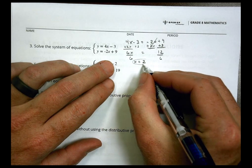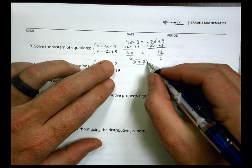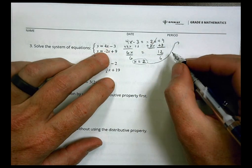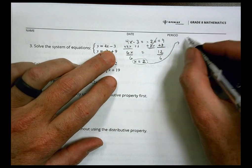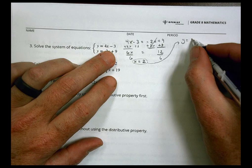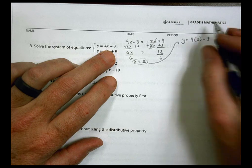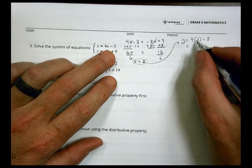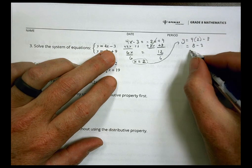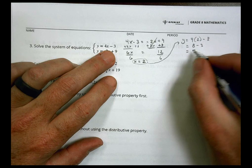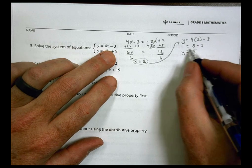So we have one point for our solution, which is x equals 2, and we'll plug it into either one of these equations. I'm going to do the first one. y equals 4 times 2, because that's the value of x, minus 3. 4 times 2 is 8 minus 3, and 8 minus 3 is 5, so y equals 5.